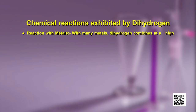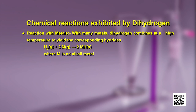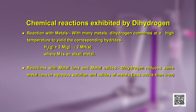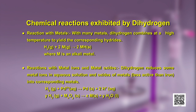Reaction with metals: with many metals, dihydrogen combines at high temperature to yield the corresponding hydrides (represented as MH, where M symbolizes any metal). Reaction with metal ions and oxides is slightly different — dihydrogen reduces some metal ions in aqueous solution and oxides of metals less active than iron into their corresponding metals. For example, palladium ion is reduced to Pd(s) giving 2H⁺ in solution. Similarly, a metal oxide MₓOᵧ reacts with Y H₂ to give the metal in its reduced state.